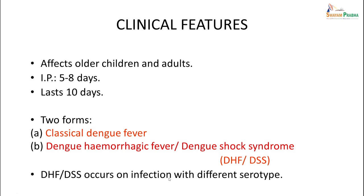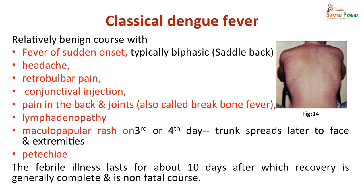Dengue hemorrhagic fever or dengue shock syndrome usually occurs with a different serotype — if you had a normal dengue fever with one serotype, the next infection with another serotype may present as DHF or dengue shock syndrome. Classical dengue fever is relatively benign: sudden onset fever, typically biphasic — saddle-back fever — with headache, retro-orbital pain, conjunctival injection, pain in back and joints (also called break-bone fever), lymphadenopathy. A maculopapular rash can appear on the third or fourth day, starting on the trunk and spreading to the face and extremities. The febrile illness lasts about 10 days, after which recovery is generally complete — a non-fatal course.